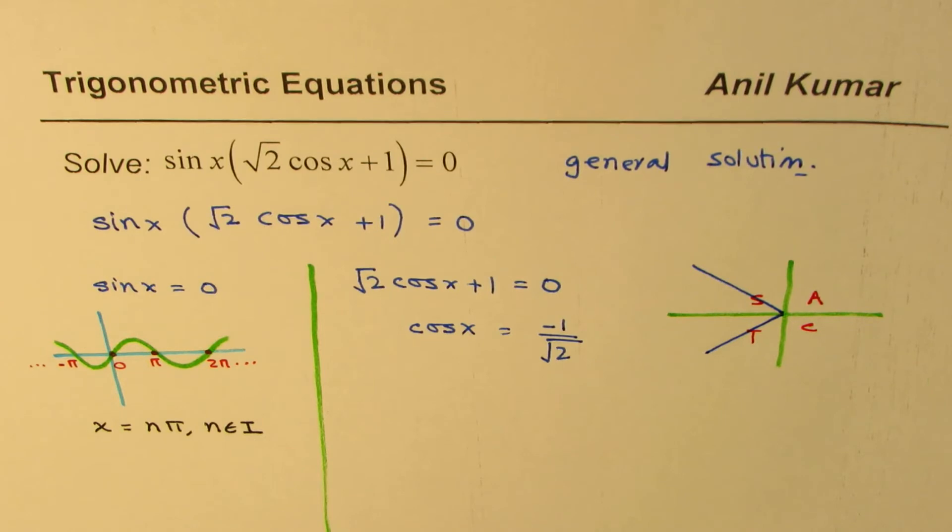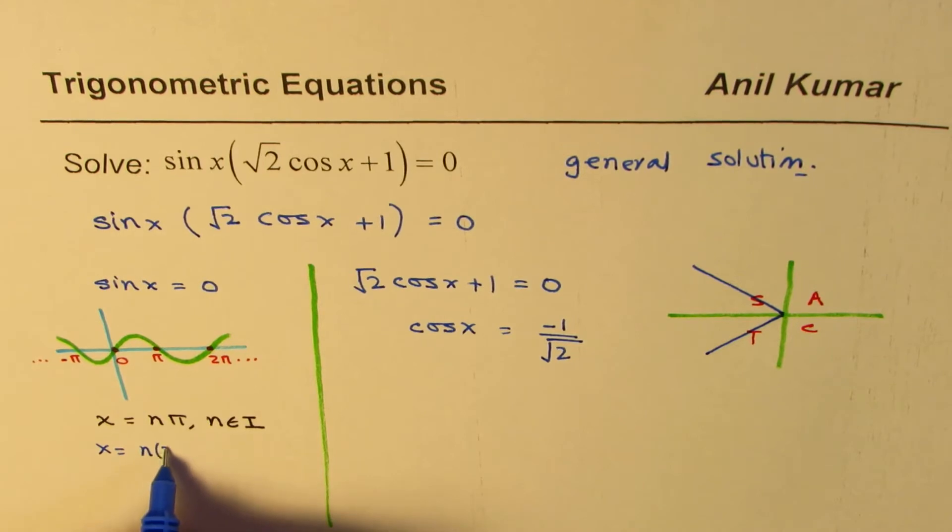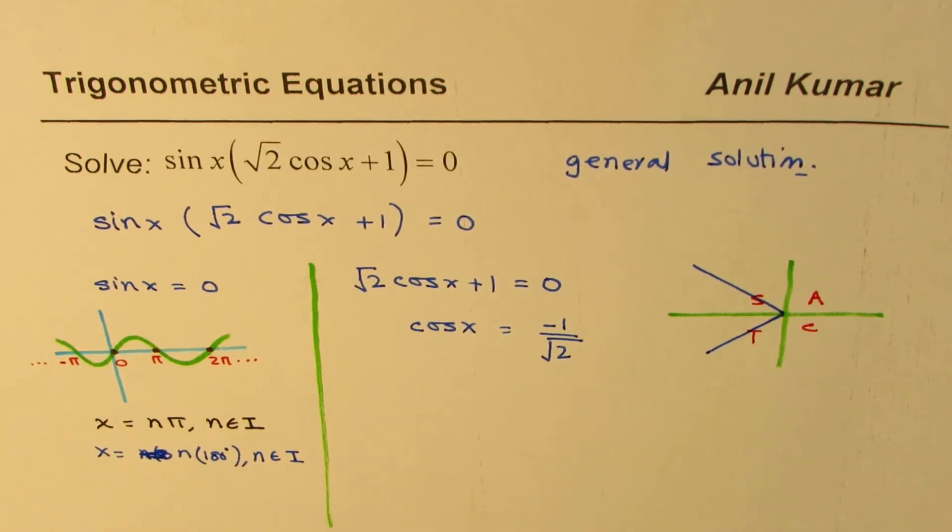So these are the two solutions in 0 to 2 pi range. I've written this solution in radians, right? So given this solution in radians, you could have written x equals to n times 180 degrees, where n belongs to integers, if you're writing in degrees.